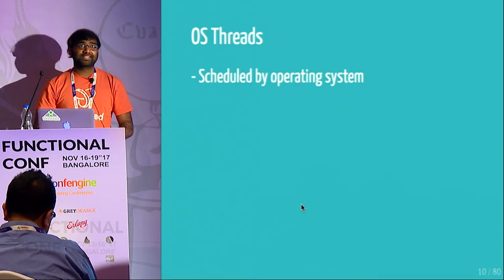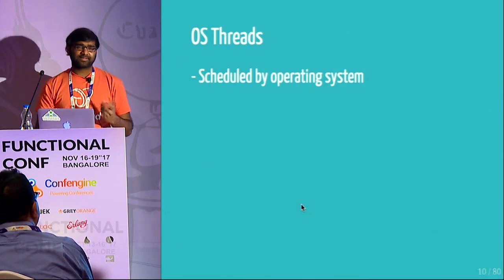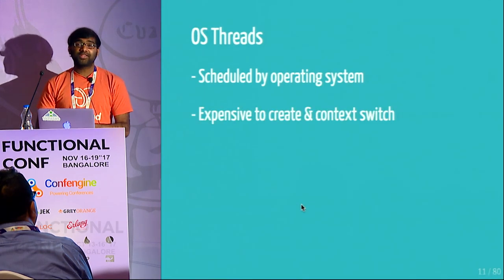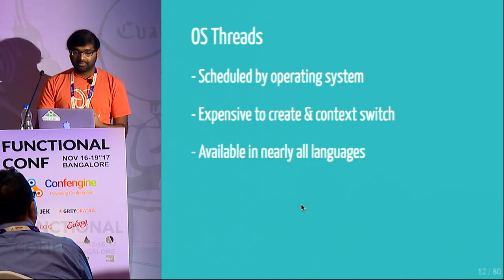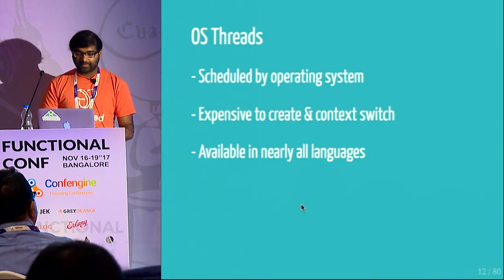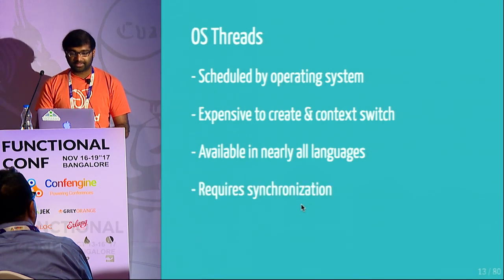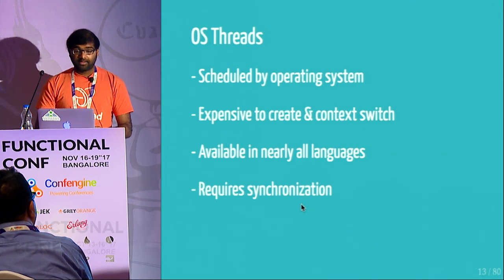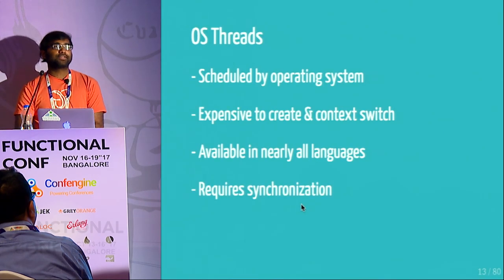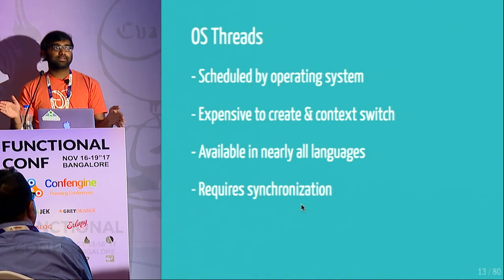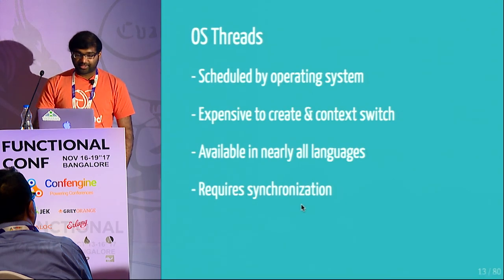OS threads are primarily scheduled by the operating system — users don't have much control over it. Threads are expensive to create and context switch, and the thread abstraction is available in almost every language, probably except Node.js since JavaScript is single-threaded. Another requirement of using threads is you need to be able to synchronize between multiple threads, because different points of execution often access the same area of memory, and you have to keep memory consistent to avoid the dreaded concurrency bugs.